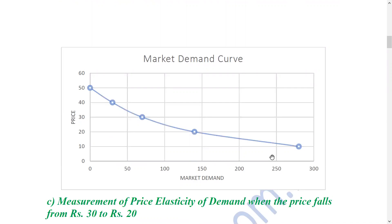The price corresponding to market demand: at 10 rupees the quantity is 280 units, at 20 rupees it is 140 units, at 30 rupees it is 70 units, and at 40 rupees it is 40 units. The combination of these points gives a downward-sloping demand curve, showing the inverse relationship between price and market demand.